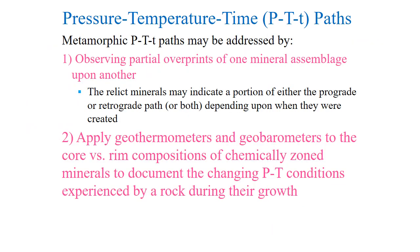Metamorphic P-T-t paths may be addressed a number of ways. First, by observing partial overprints of one mineral assemblage upon another, in that the relic minerals may indicate a portion of either the prograde or retrograde path, or both, depending upon when they were created.